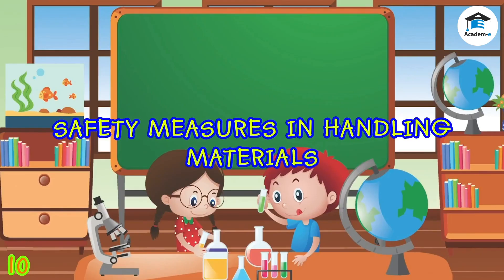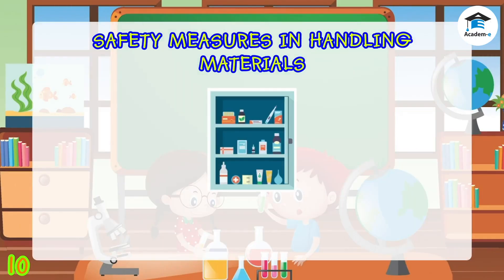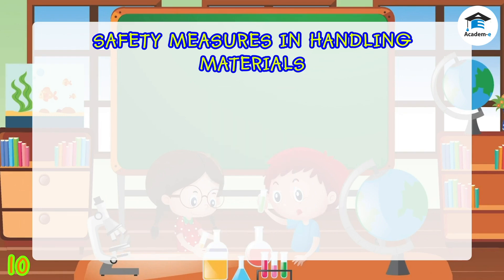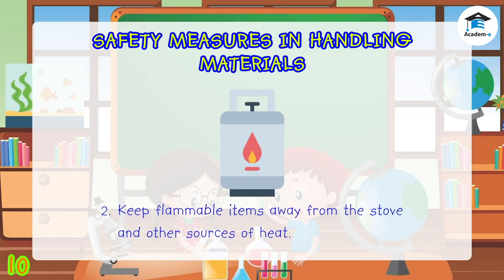Here are some safety measures that you should observe when handling harmful materials. One: vitamins and medicines should be kept in a medicine cabinet with a lock. Two: keep flammable items like gasoline, alcohol, and kerosene away from the stove and other sources of heat because they easily catch fire.